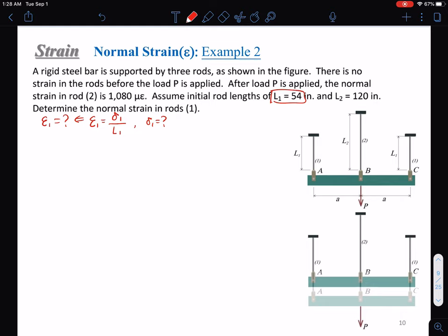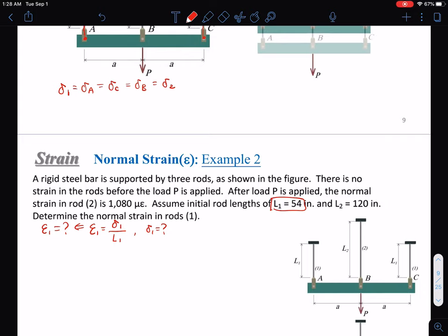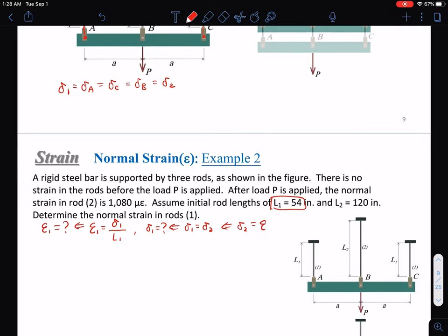Do we know delta one? We don't know it directly, but based on our analysis, delta one equals delta two. Delta two equals epsilon two times L two. We know L two and epsilon two.